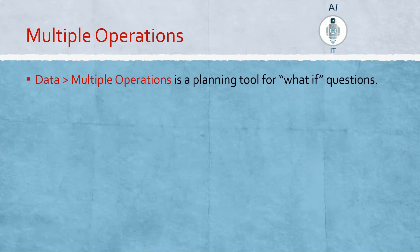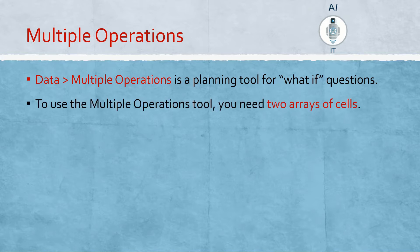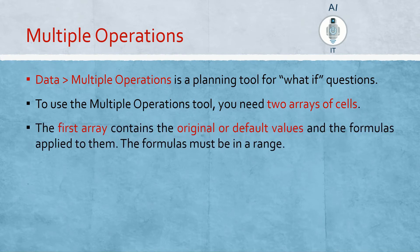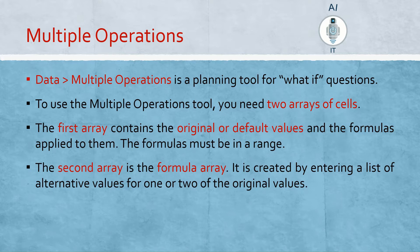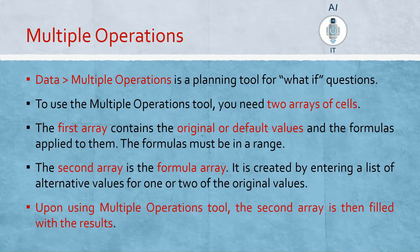Multiple operations is a planning tool for what-if questions. To use this we need two arrays of cells. The first array contains the original or default values and the formulas applied to them — these formulas have to be in a range of cells with continuity. The second array is the formula array, created by entering a list of alternate values for one or more of the original values. Upon using the multiple operation tool, the second array is filled with the results.